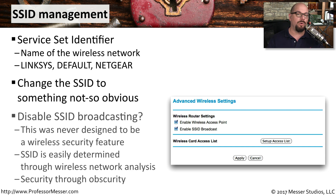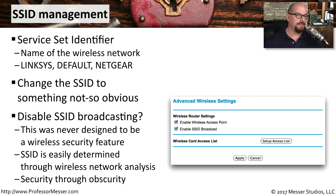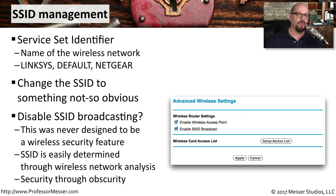Some people will disable SSID broadcasting in their wireless access point so that if you pull up a list of available SSIDs, your SSID will not appear. However, this is not really a security feature. SSIDs are there for more of an organizational capability. You can easily determine the SSID of a wireless access point by performing packet captures on the wireless network. So disabling the SSID provides no real security function — if anything, this is security through obscurity, which is not any real security because it's so easy to circumvent.